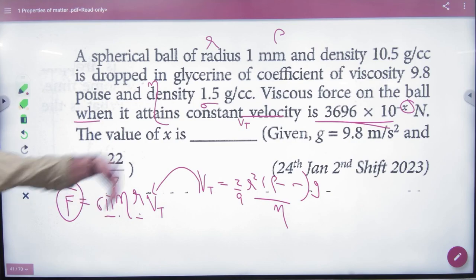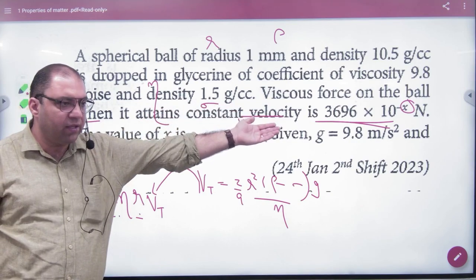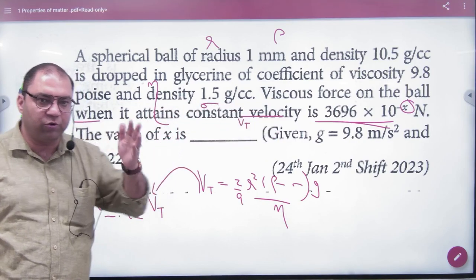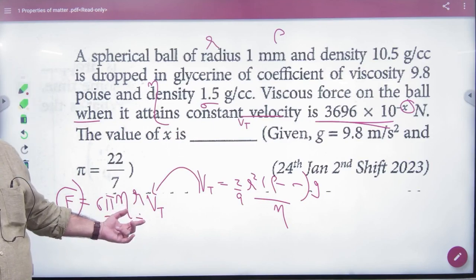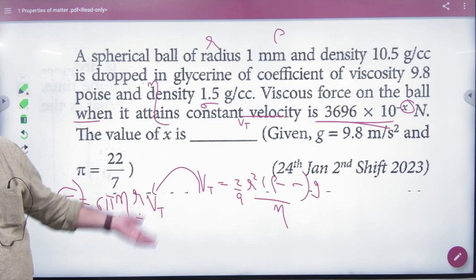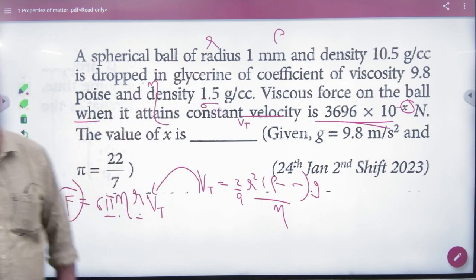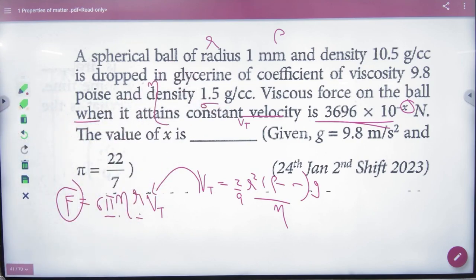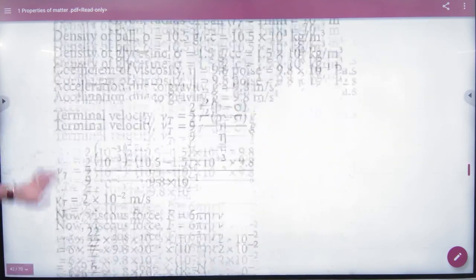The question asks for F, the viscous force. At terminal velocity, F equals the net downward force, which is weight minus buoyancy. This is the logic of the question - connecting to the concept from the previous problem.